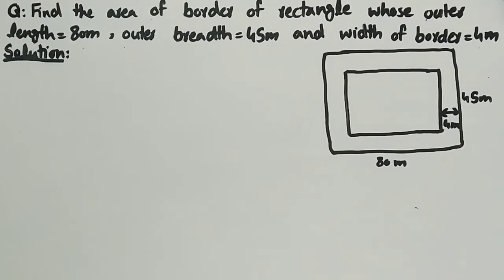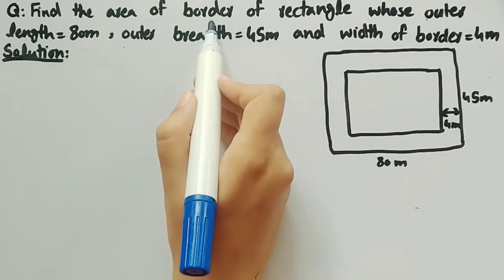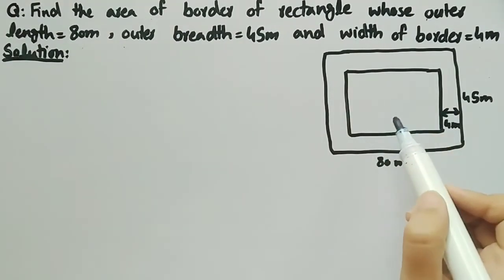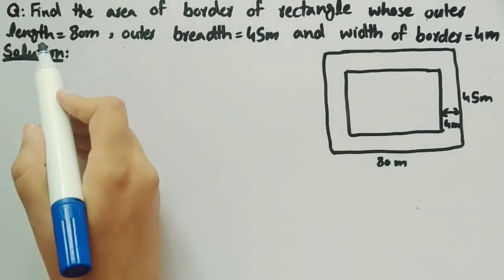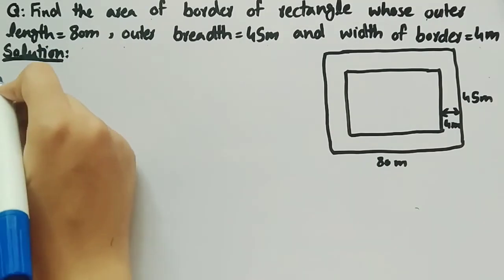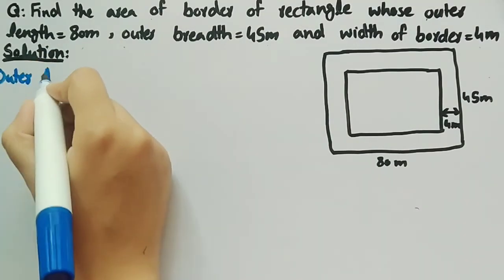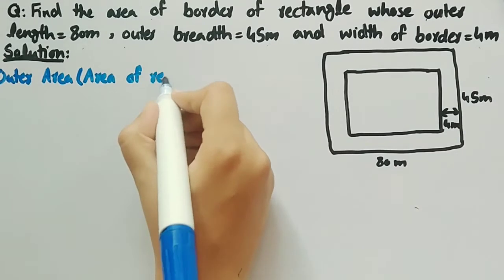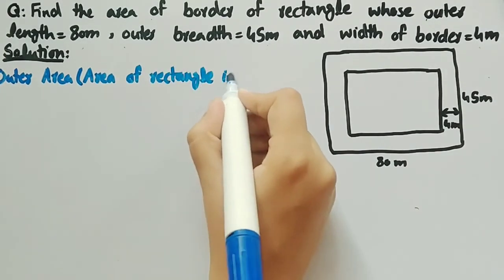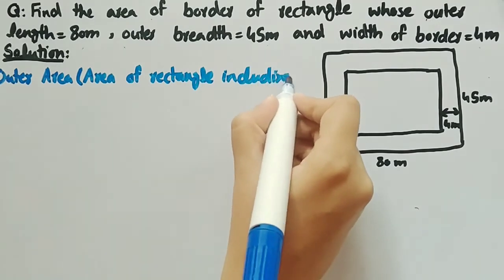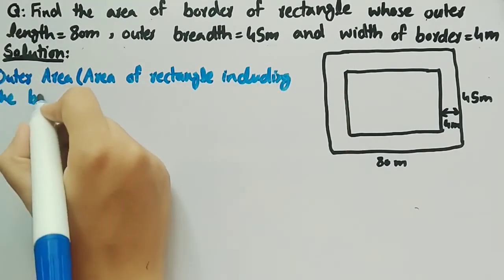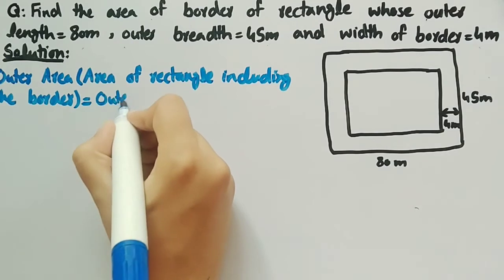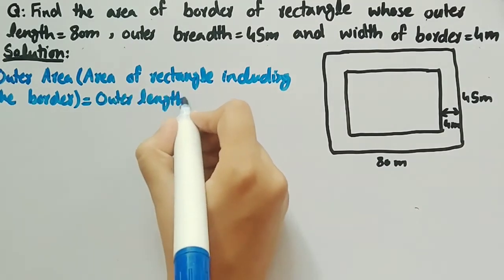Since we have to find the area of the border, for this we need the area of the rectangle including the border and the area of the rectangle excluding the border. Since outer breadth and outer length are given, firstly we will find the outer area, that is the area of the rectangle including the border, which is equal to outer length multiplied by outer breadth.